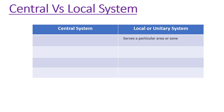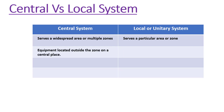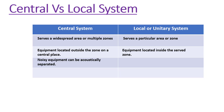In summary, HVAC systems may be organized as local systems with packaged equipment serving a particular area, or as central systems with a collection of plants serving a widespread area or multiple zones. The main benefit of a central system is that all equipment is located outside the zone so maintenance can be easily performed without disturbing occupants. In local systems, the packaged equipment is inside the zones, so maintenance is not easy. Also, in central systems, noisy equipment can be acoustically separated.